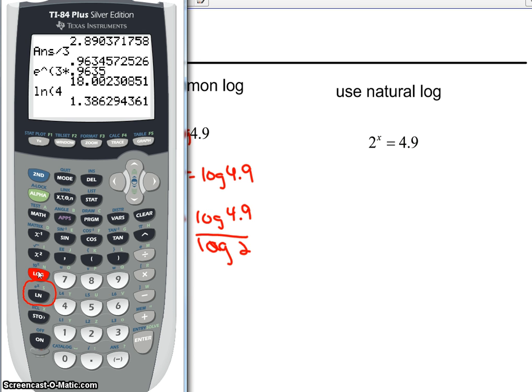So 1 in log, 4.9, enter, divide, log, 2, enter, get 2.293.